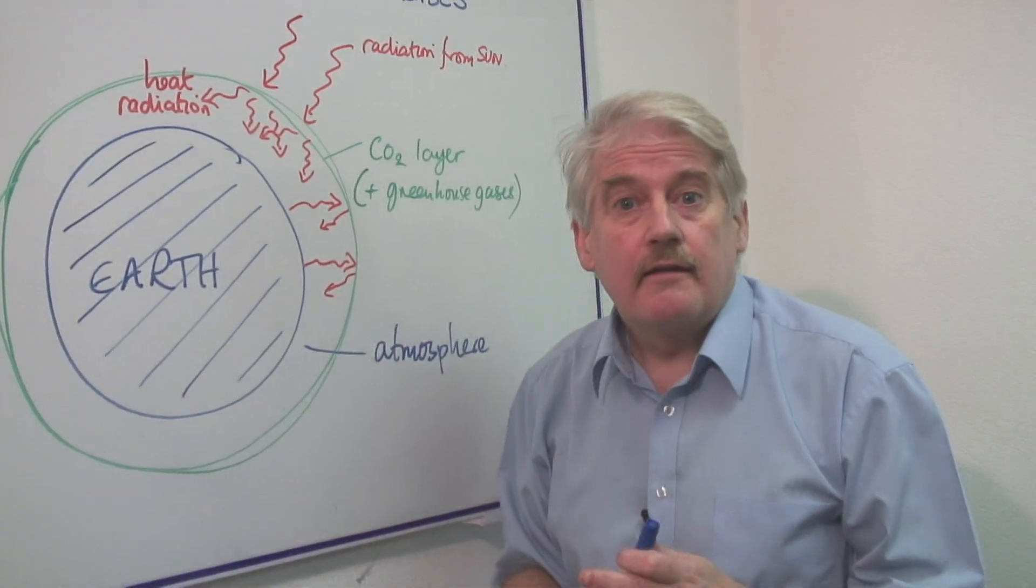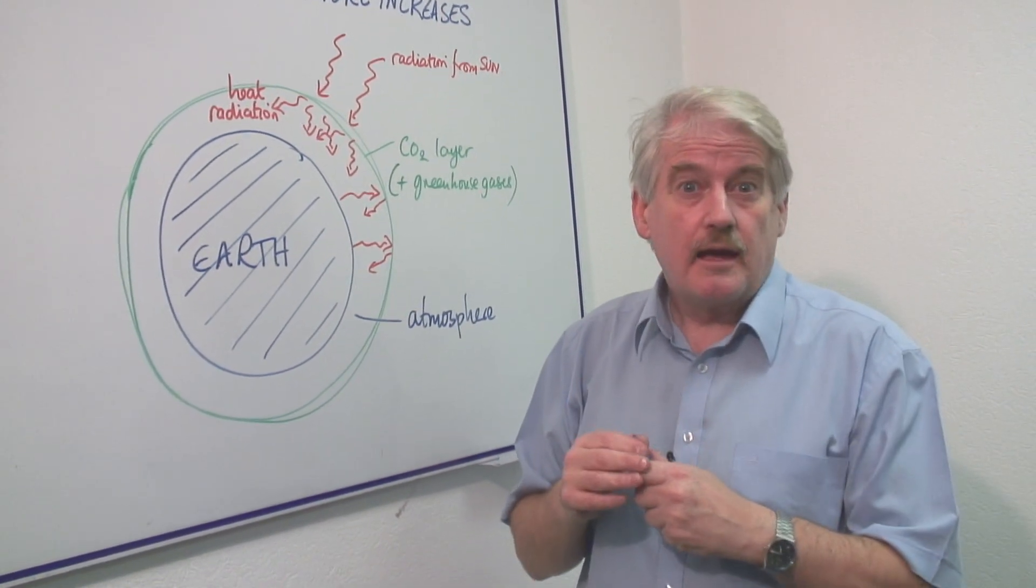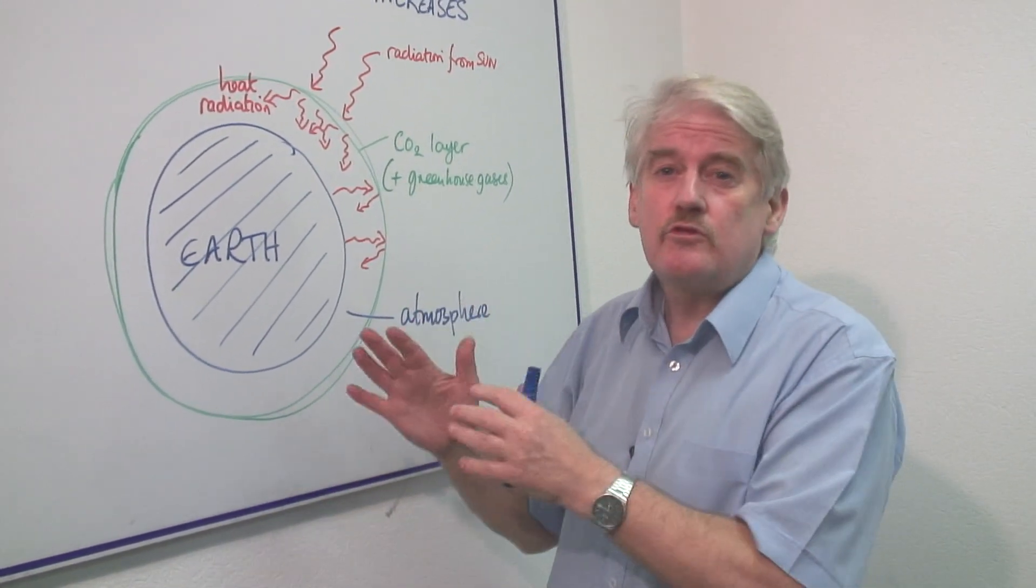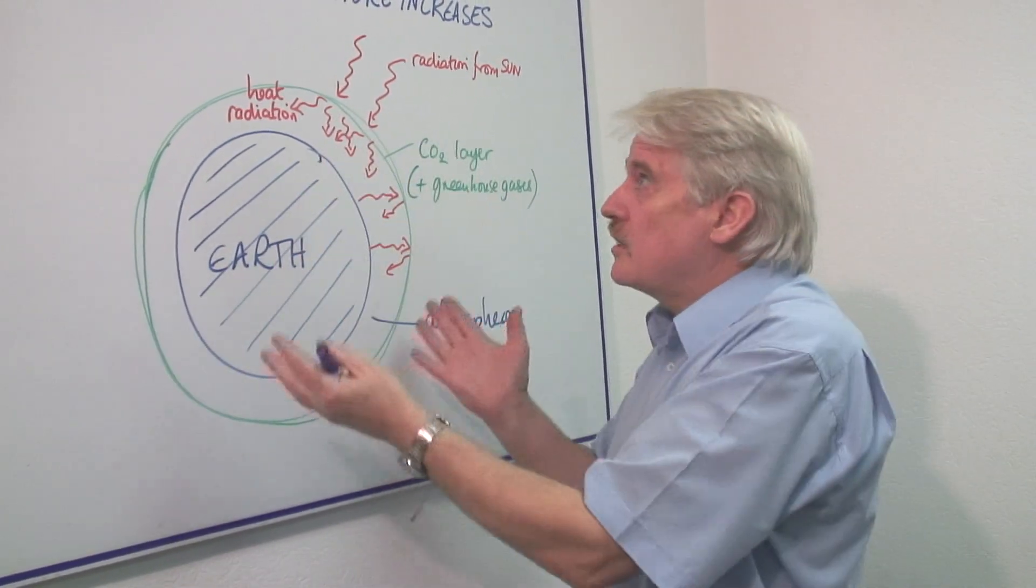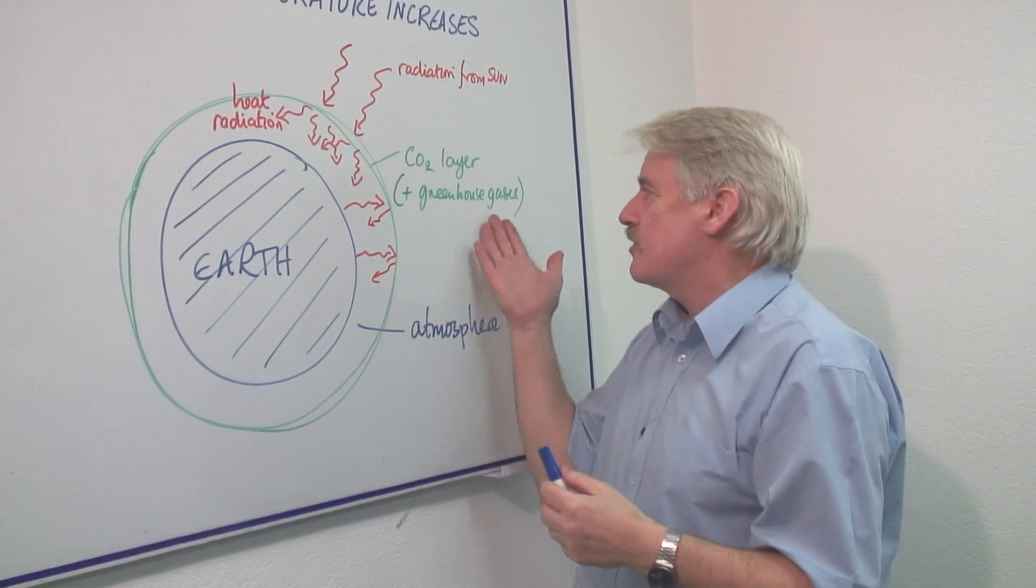A runaway greenhouse effect is seen on Venus, for example, where the temperature in the atmosphere is hugely higher than it should be. This is because of the greenhouse effect, which we get from carbon dioxide and other greenhouse gases.